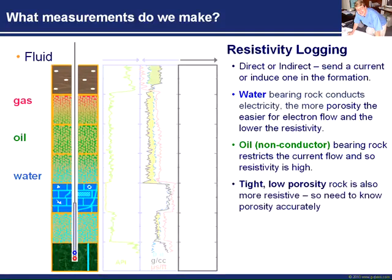One thing we've got to be careful about when we interpret resistivity logs is that high resistivity may not be the result of oil saturation - the thing we're looking for. Sometimes it's because the rock is tight. The low porosity end of the spectrum means that the resistivity is increasing. That's why we need to know the porosity before we start our resistivity interpretation. We have to be able to distinguish low porosity, high resistive rocks from what we're interested in - the high porosity oil-bearing rocks.